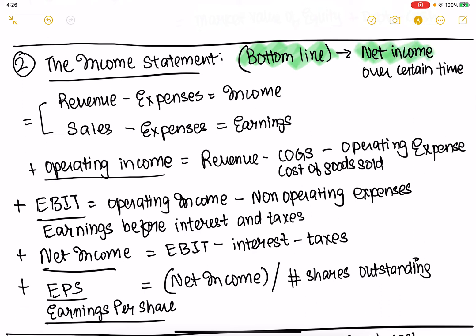If you do revenue minus expenses, you get income. Revenue is the same as sales. You could also say sales minus expenses equals earnings — earnings is the same as income. So revenues equals sales, income equals earnings — these are all terminologies from accounting. This is a quick recap.